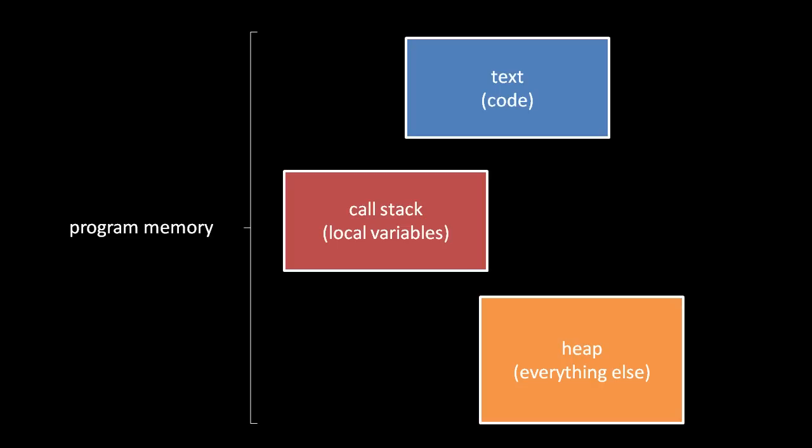The text section simply stores the code of the process and so is generally made read-only. The stack is a contiguous chunk in which we keep track of the chain of function calls and store their local variables. The heap is effectively the rest of the address space, where we can store any data other than the local variables.